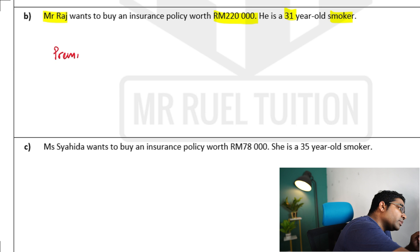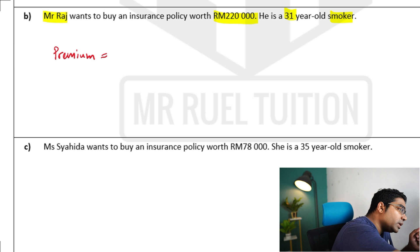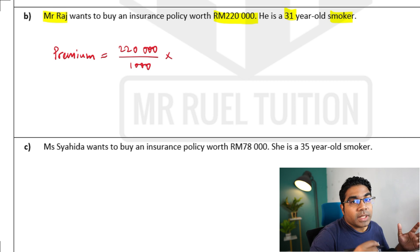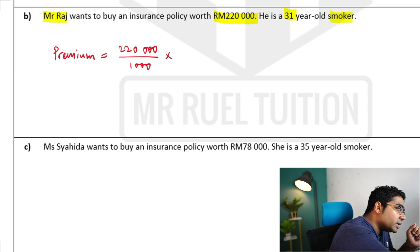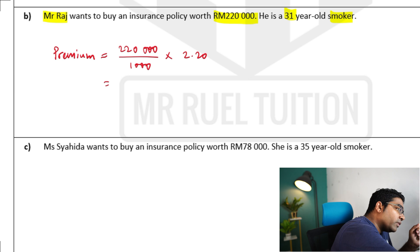His annual premium would be: we divide 220,000 by 1,000 to find out how many thousands there are in the face value of the policy, and then multiply by the rate per thousand ringgit face value, which is 2 ringgit and 20 cents. This premium equals RM484.